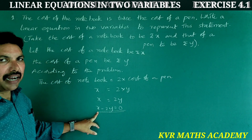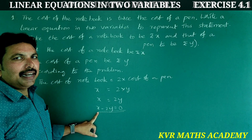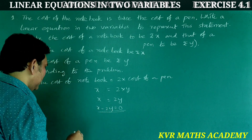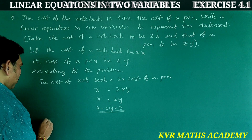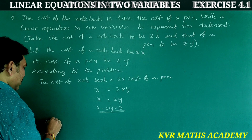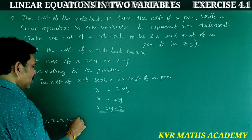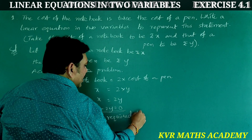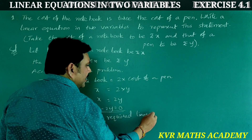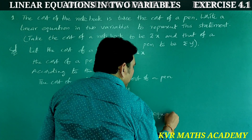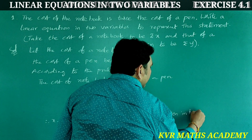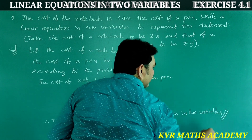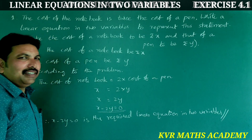Transferring 2y to the left side: x minus 2y is equal to 0. Therefore, x minus 2y = 0 is the required linear equation in two variables.